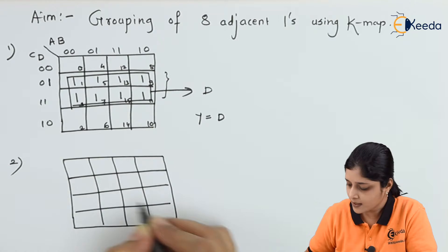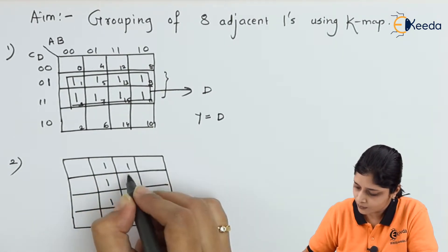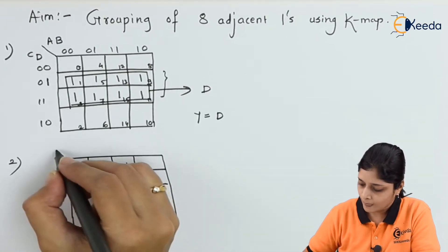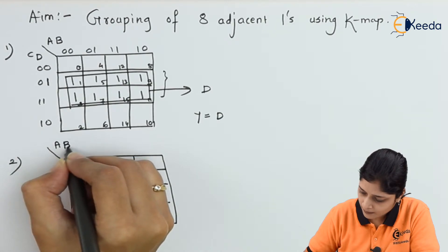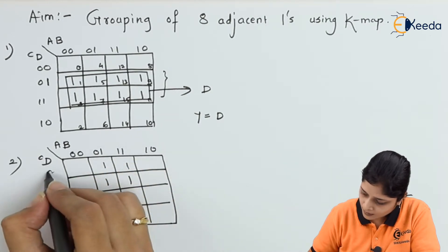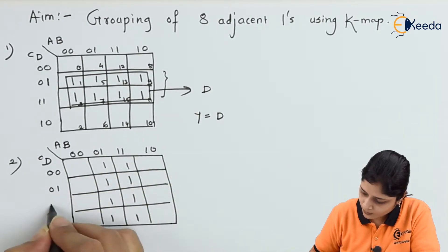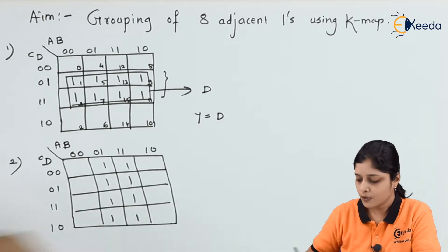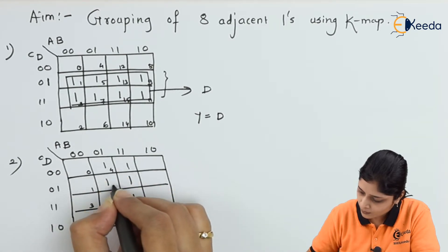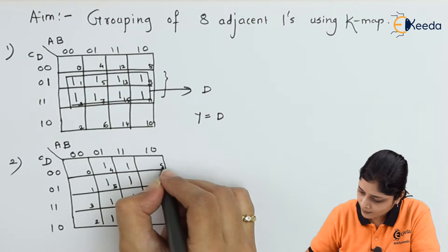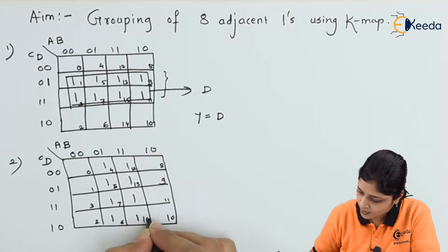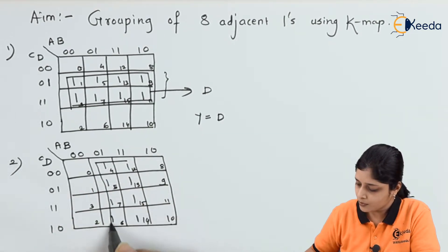Let's take the second example. In this given problem, eight ones are present in a specific pattern. Write down the variables A, B, C, D with their labels: 0 0 0 0 1 1 1 1 for A, and 1 0 0 0 0 1 1 1 1 0 for B. Inside the boxes, number them 0 through 15.